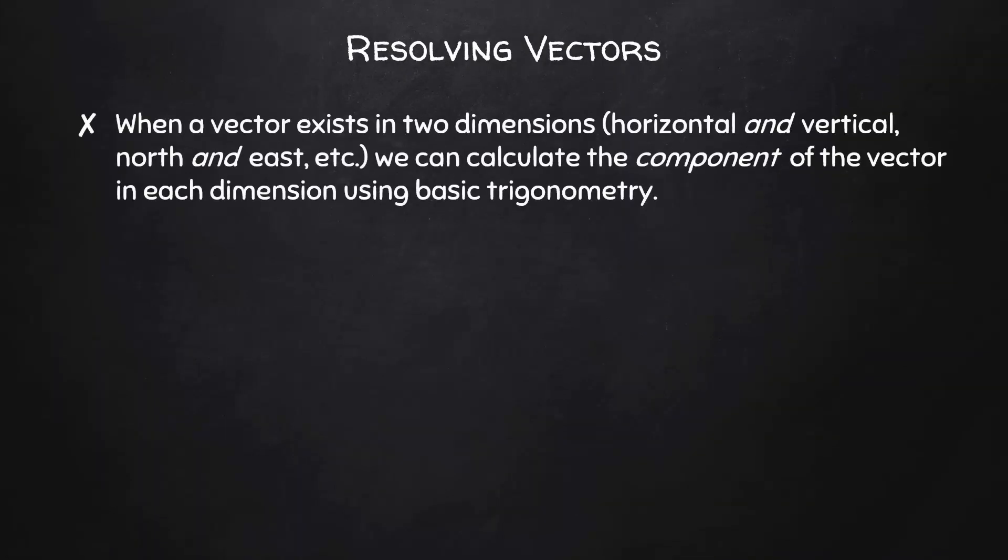When a vector exists in two dimensions, both horizontal and vertical, or north and east, etc., we can calculate the component of the vector in each dimension using basic trigonometry.